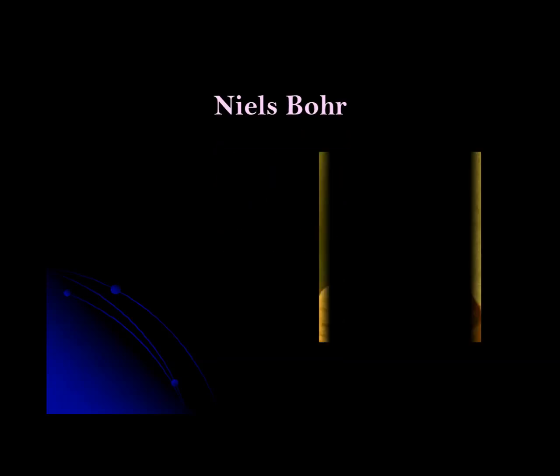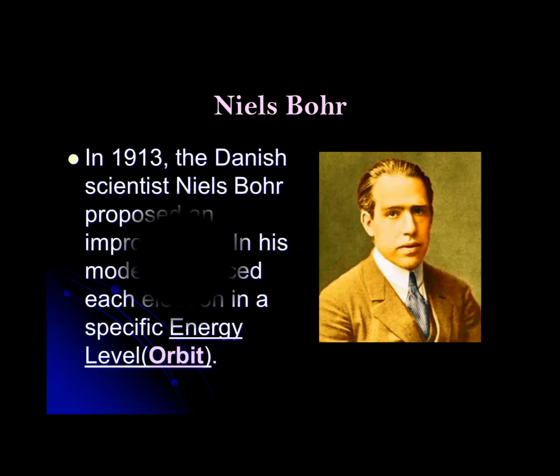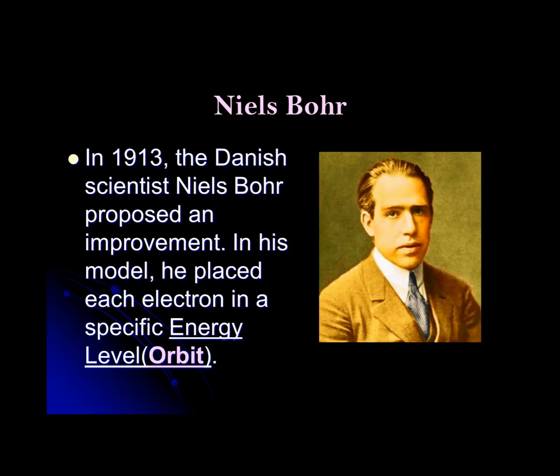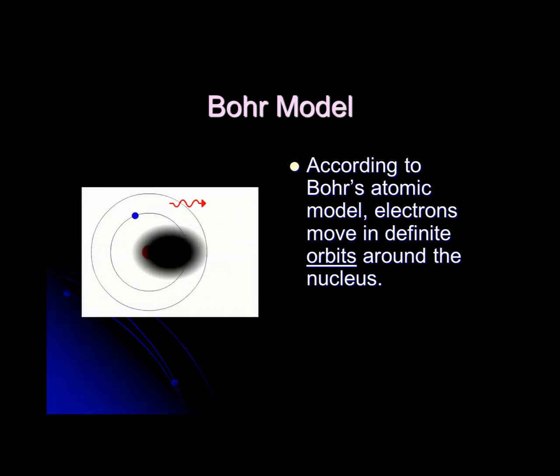There were a few defects in Rutherford's theory, so his student Niels Bohr removed all the defects of Rutherford's theory. In 1913, this Danish scientist Niels Bohr proposed an improvement in Rutherford's atomic model. In his model, he placed each electron in a specific energy level, also called an orbit — so he introduced the concept of orbit for the first time. According to Bohr's atomic model, electrons move in definite orbits around the nucleus.